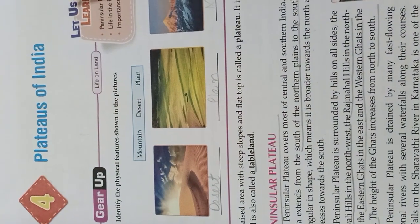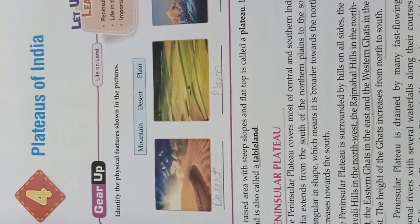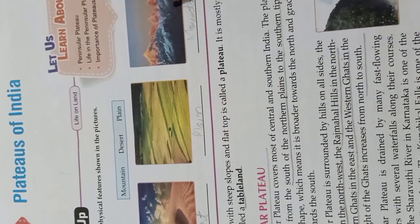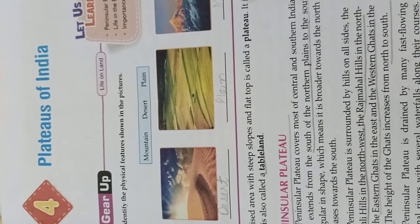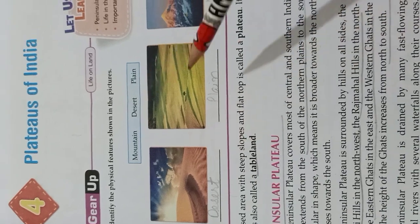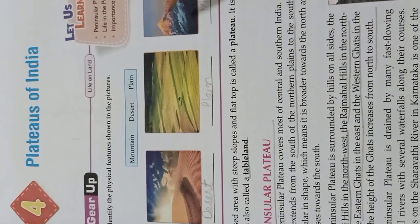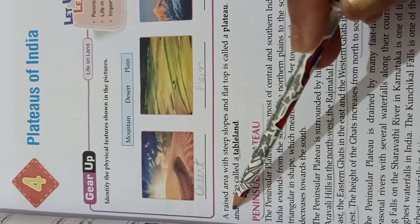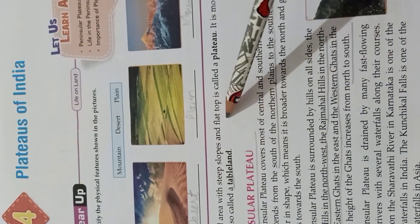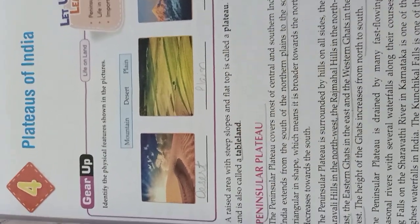Plateaus means pathar. You can see some of the physical features are given here. You have to write their name — number 1 is desert, plain, and this is mountain. This was the previous thing, we have gone through this one. So today let's discuss about plateaus. What is a plateau? A raised area with steep slopes and flat top is called a plateau.